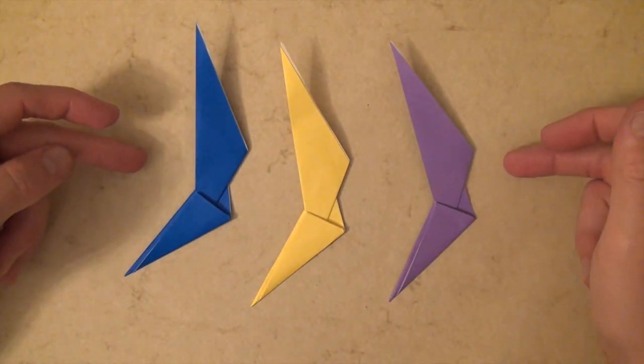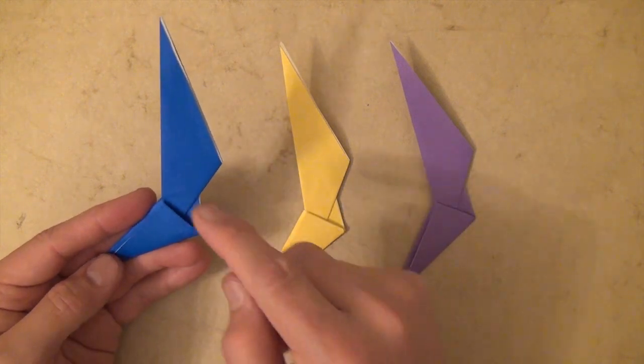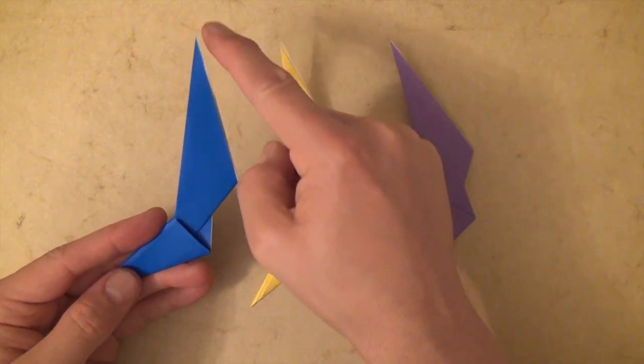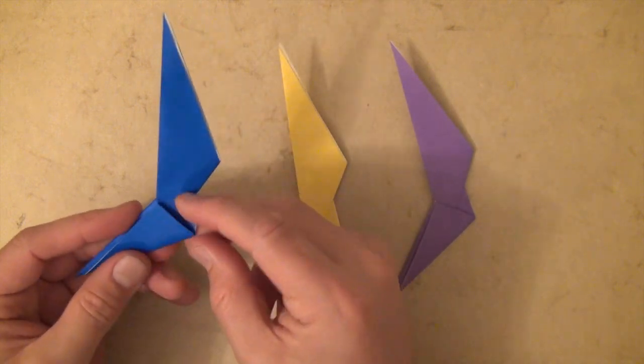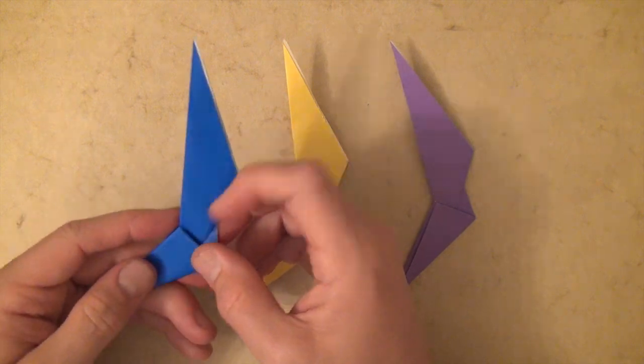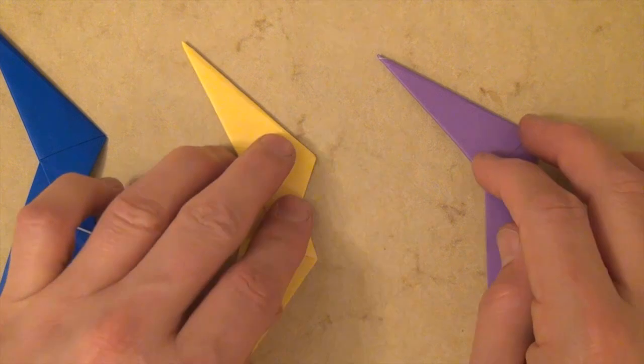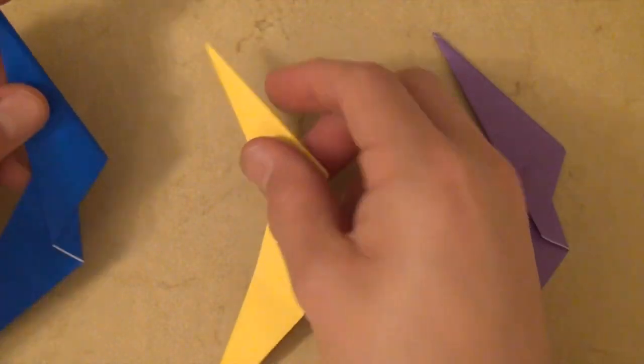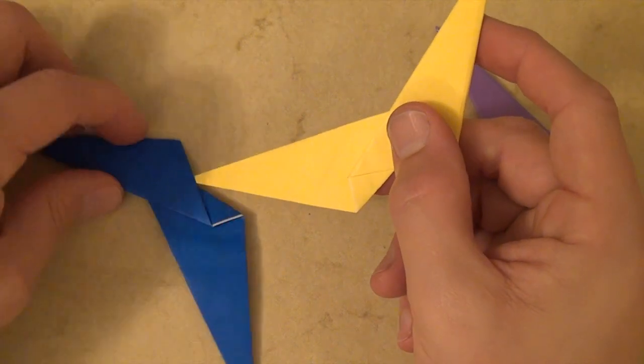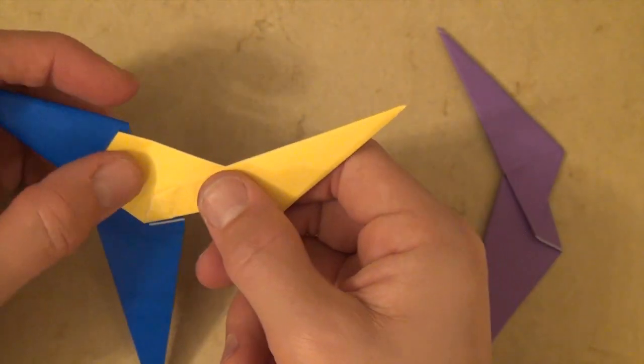Alright, so we've got our three modules, and now it's time to assemble the ninja star. So notice with these modules that they have one smaller point and one larger point. And the smaller point has two pockets, one and two. So we have three, and let's turn them over top to bottom. And now this bigger flap right here is going to go into this pocket, like that.